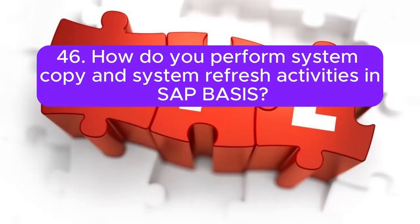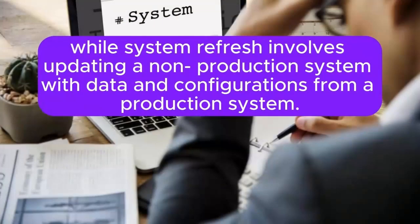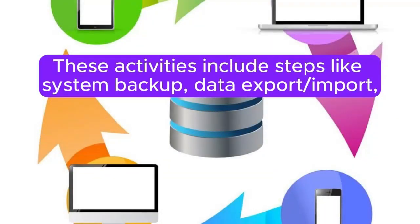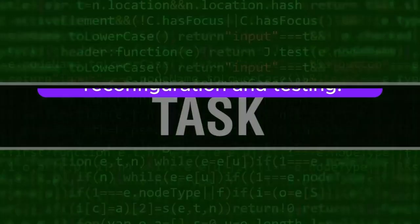Question 46: How do you perform system copy and system refresh activities in SAP BASIS? System copy involves duplicating an existing SAP system to create a new system instance, while system refresh involves updating a non-production system with data and configurations from a production system. These activities include steps like system backup, data export or import, client copy, and post-copy tasks like reconfiguration and testing.